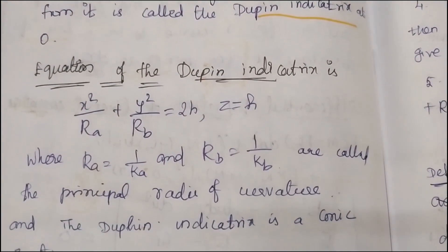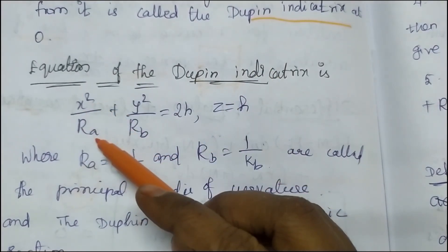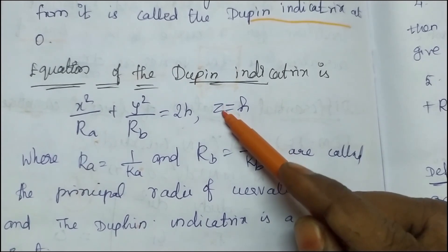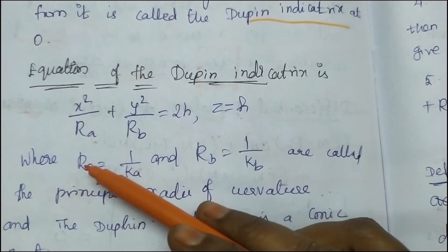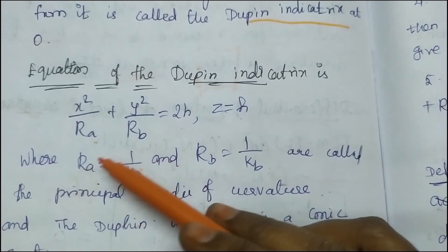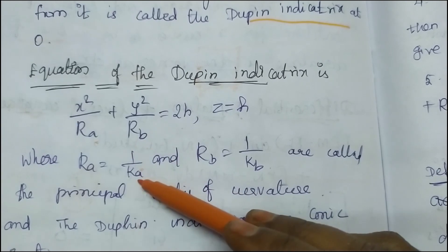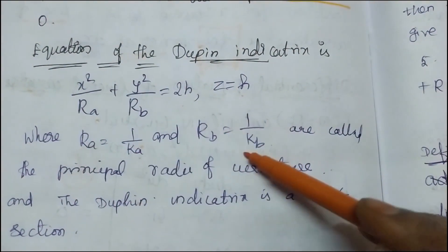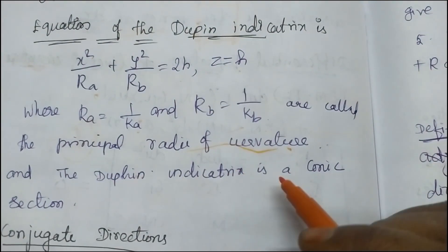What is the equation? The Dupin Indicatrix equation: x squared over R_a plus y squared over R_b equals 2h. Where z equals h. R_y is the radius of curvature. R_a is 1 over a, R_b is 1 over b. That is the principal radius of curvature.